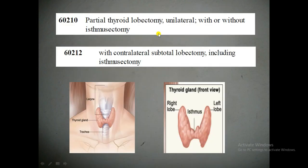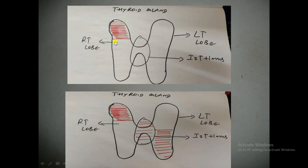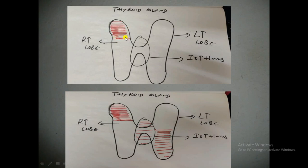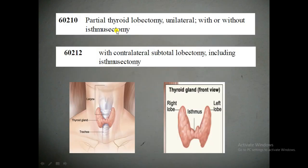To summarize 60210: 'unilateral' means one side, 'partial thyroid lobectomy' means partially removing the lobe, and 'with or without isthmectomy' means the physician may or may not remove the isthmus. So if the physician removes part of a lobe on one side and may or may not remove the isthmus, we assign CPT code 60210. Now we will look at 60212.